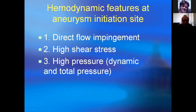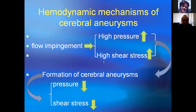The hemodynamic features at the aneurysm initiation site are: first, direct flow impediment; second, high shear stress and high pressure. These three conditions are prerequisites for aneurysm initiation — without them, the aneurysm will not develop. Flow-directed impediment can cause high pressure and high shear stress on the local wall, and the formation of cerebral aneurysm can decrease the total pressure and shear stress.